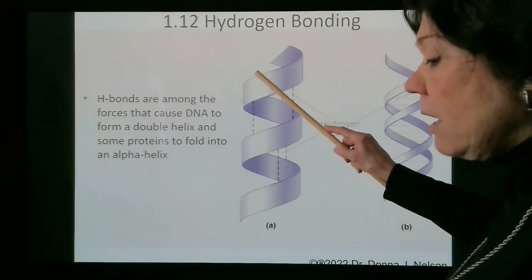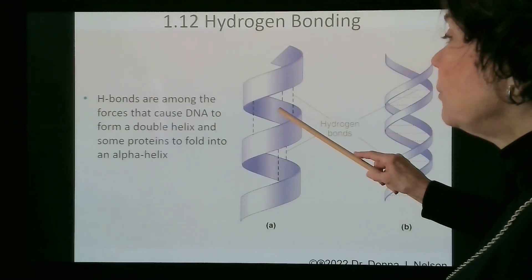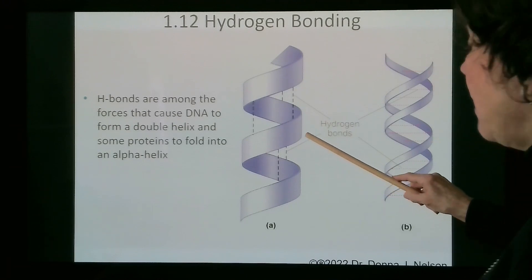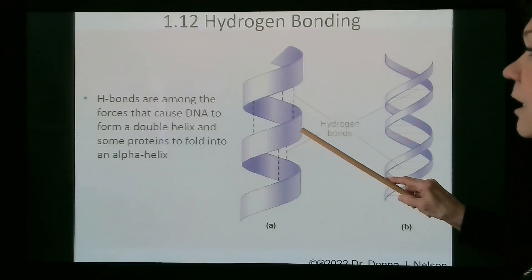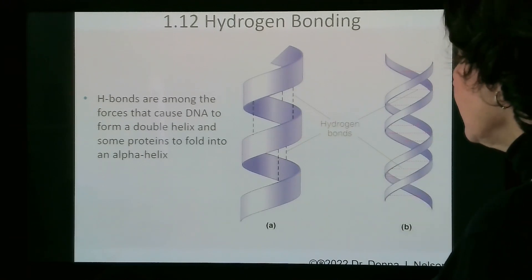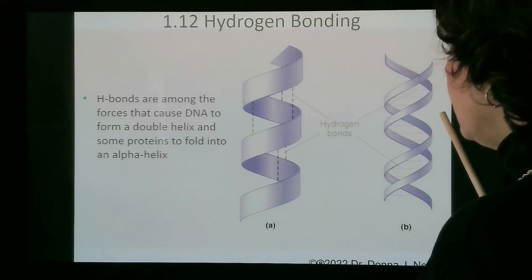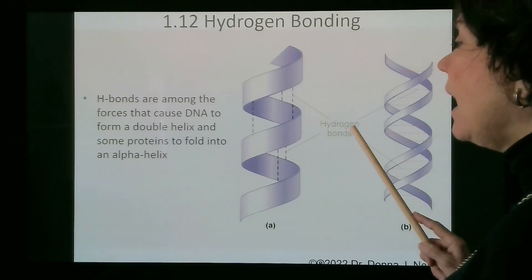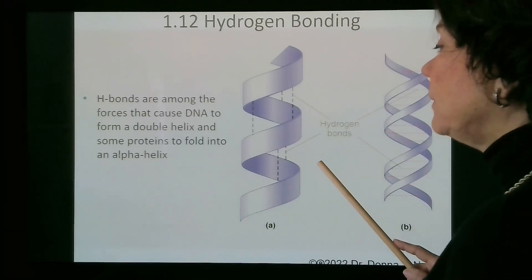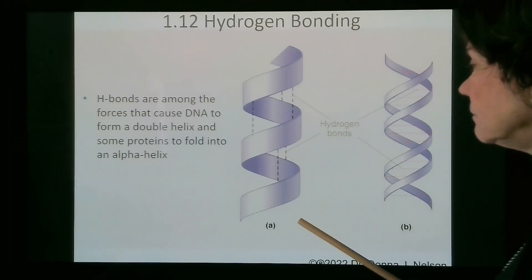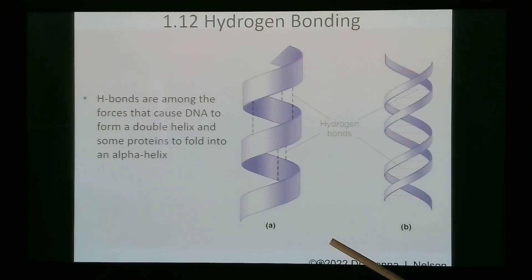Hydrogen bonding is also responsible, at least partially, for DNA forming a double helix, and it is responsible for some proteins folding into an alpha helix.